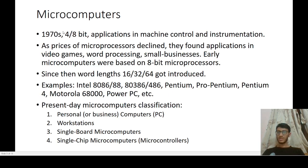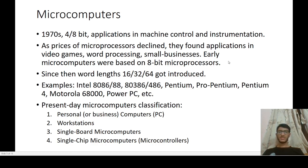Moving on to microcomputers: in the 1970s, their word length was four or eight bits, and they found applications in machine control and instrumentation. As prices of microprocessors declined with technology, they found applications in video games, word processing, and small businesses. Early microcomputers were based on 8-bit microprocessors; since then, word lengths of 16, 32, and 64 bits were introduced. Examples of microprocessors include Intel 8086, 8088, and others.